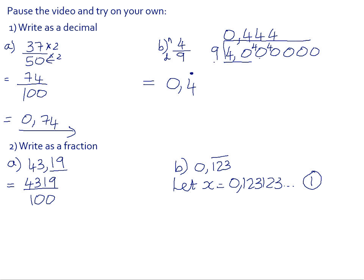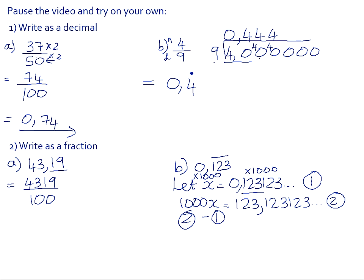We have three digits recurring here, so we multiply both sides of the equation by 1000. So we have 1000x. That makes sure we get the full recurring portion in front of the decimal comma, with the same order after it, so that when we subtract the two equations those decimal places eliminate each other. 1000 minus 1 is 999. 123.123... minus 0.123... — all the decimal places cancel to give 0, leaving 123. Divide both sides by 999, and 0.123 recurring equals 123 over 999, which does not simplify.